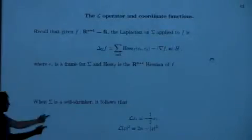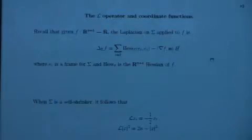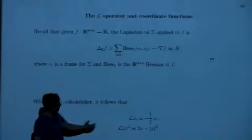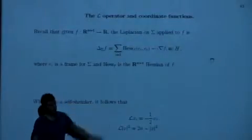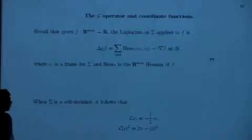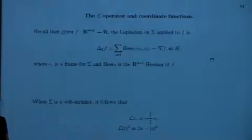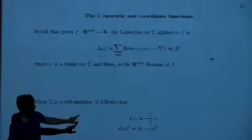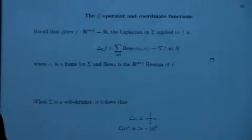For a minimal surface, coordinate functions are harmonic restricted to the surface. For a self-shrinker, coordinate functions are eigenfunctions with eigenvalue minus one-half. If you apply script L to |x|², it equals 2n minus |x|². An interesting question: on Euclidean space, if you look at all polynomially growing eigenfunctions of script L with a bound on growth and eigenvalue, the space of those is finite dimensional — which follows from something Maria proved — because those eigenfunctions correspond to homogeneous solutions of the heat equation once you bring in the time parameter.